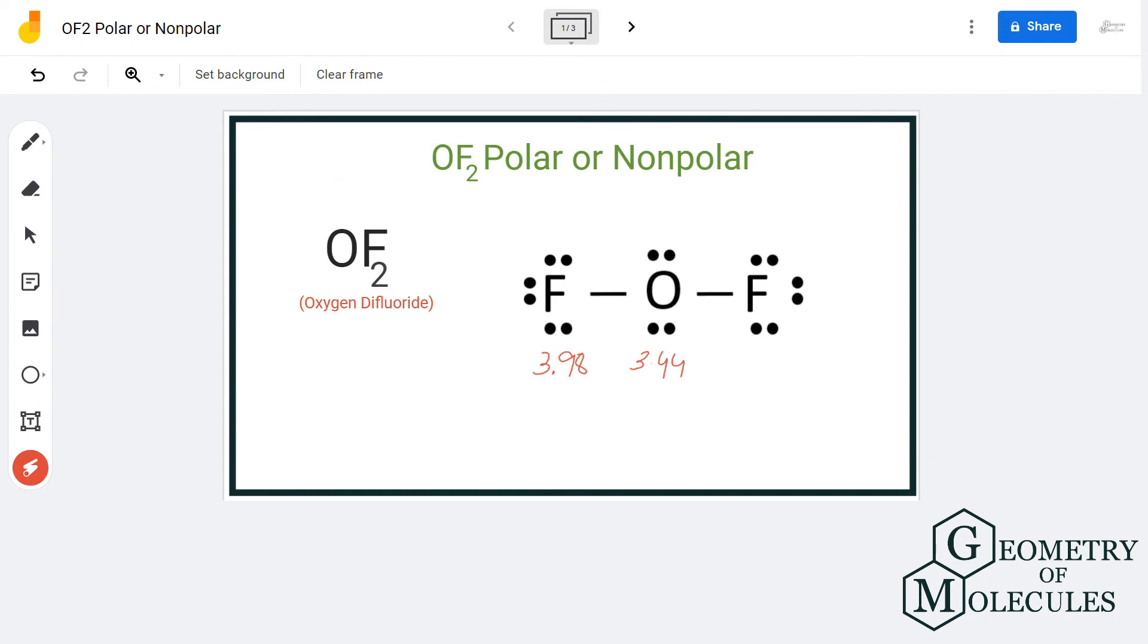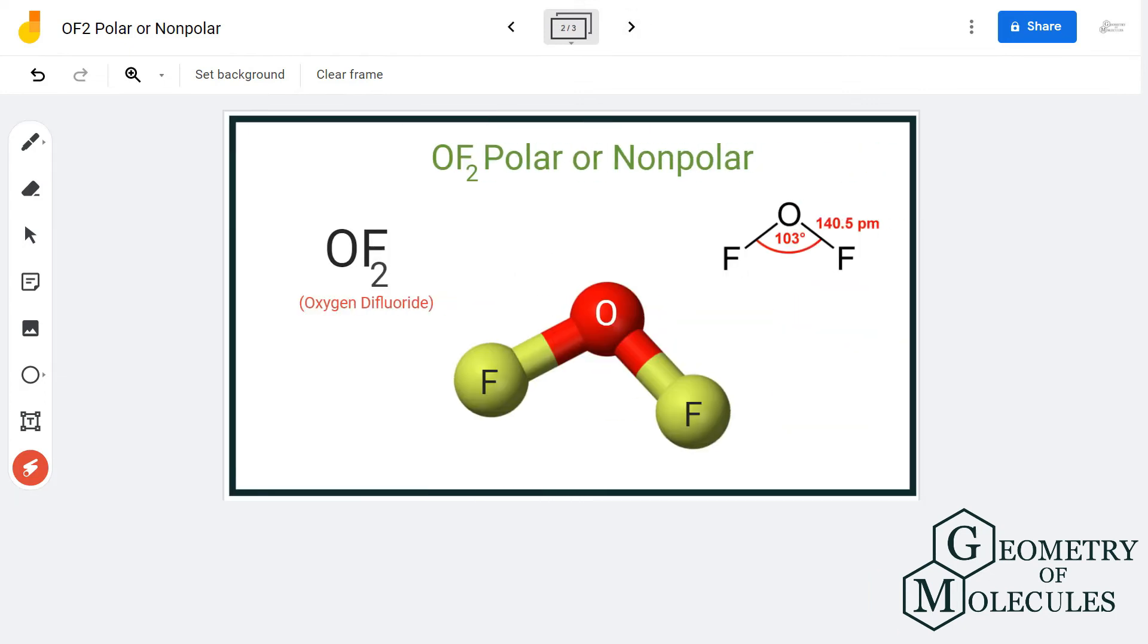These two lone pairs in the molecule cause distortion in the shape, due to which the dipole moments are not cancelled out and there is a net dipole moment in this molecule. This makes OF2 a polar molecule. I hope this video helps you understand the polarity of OF2 molecule.